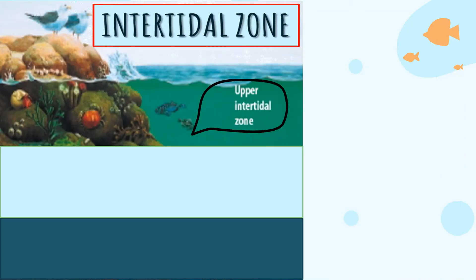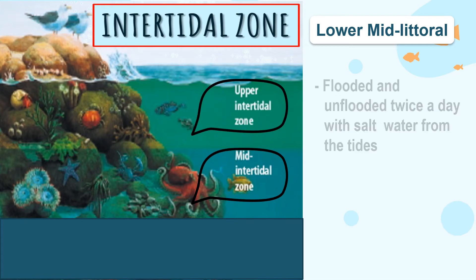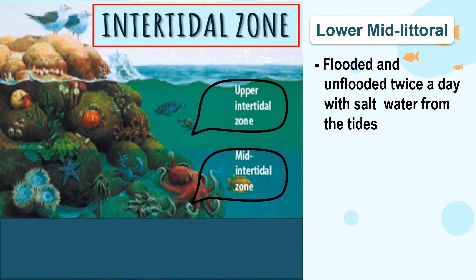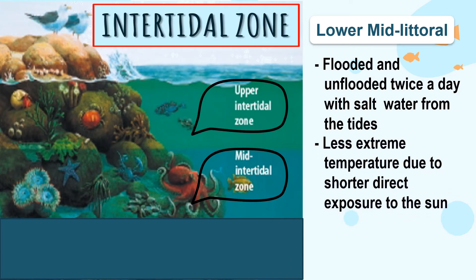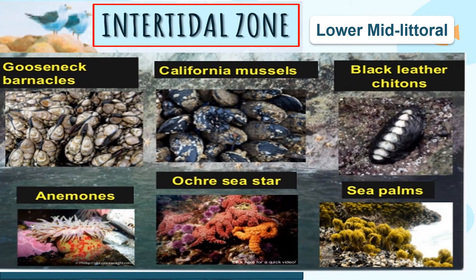The second sub-zone of the intertidal zone is the mid intertidal zone, also called the lower mid-littoral. The middle tidal zone is flooded and unflooded twice a day with salt water. Temperatures are less extreme due to shorter direct exposure to the sun, and salinity is slightly higher than ocean levels. However, wave action is generally more extreme than in the high tide and spray zones. Organisms in this zone include gooseneck barnacles, Californian mussels, black leather chitons, anemones, ochre sea stars, and sea palms.